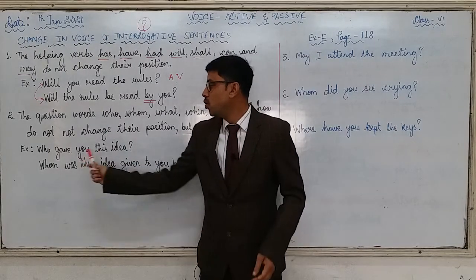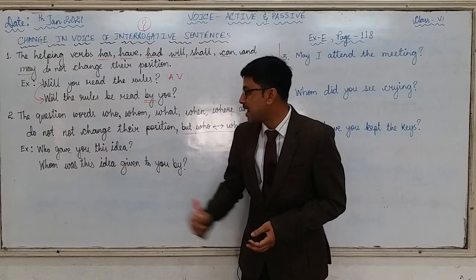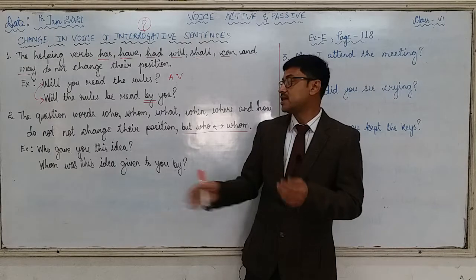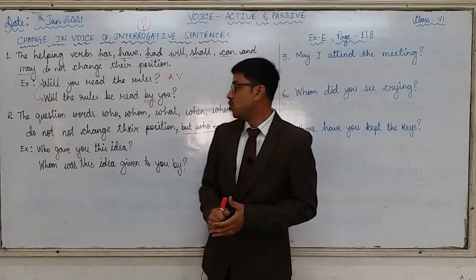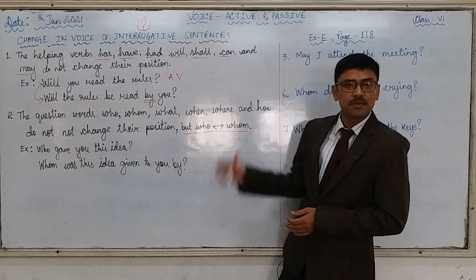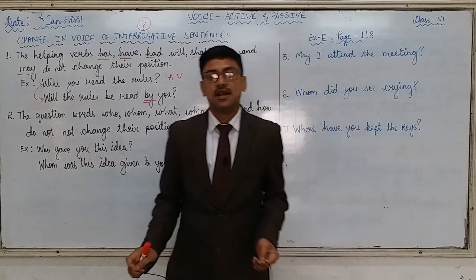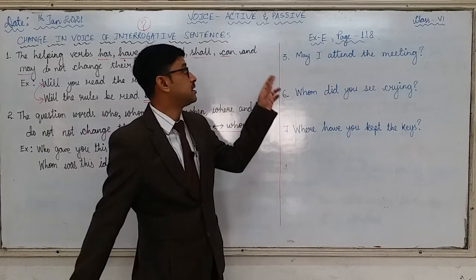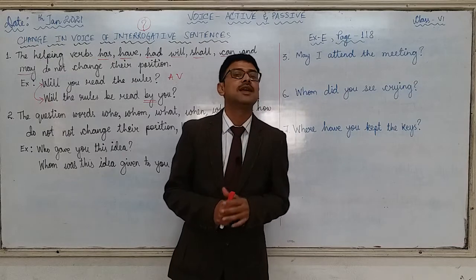Let us see the example: 'Who gave you this idea?' When we change it into passive voice it becomes: 'Whom was this idea given to you by?' This is very simple, and by now after doing so many exercises in this chapter I think you are pros and will be able to do exercise number E in your grammar copy very easily.